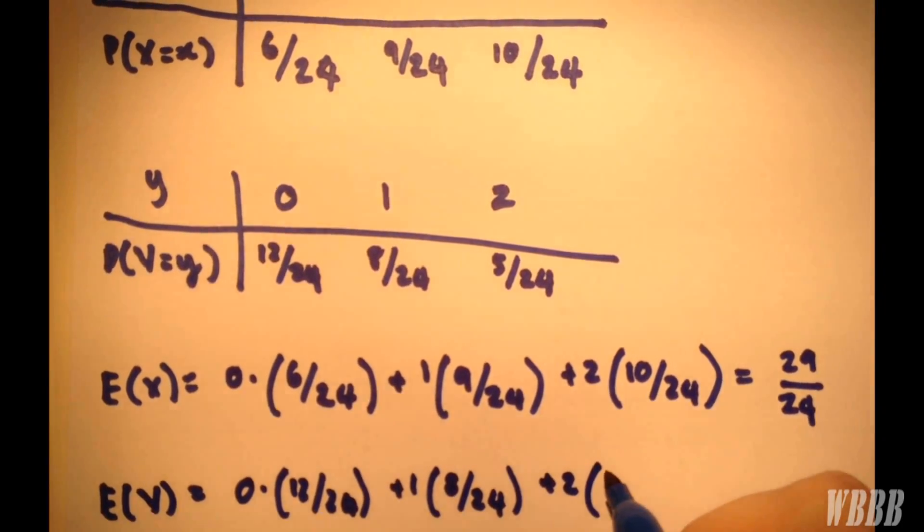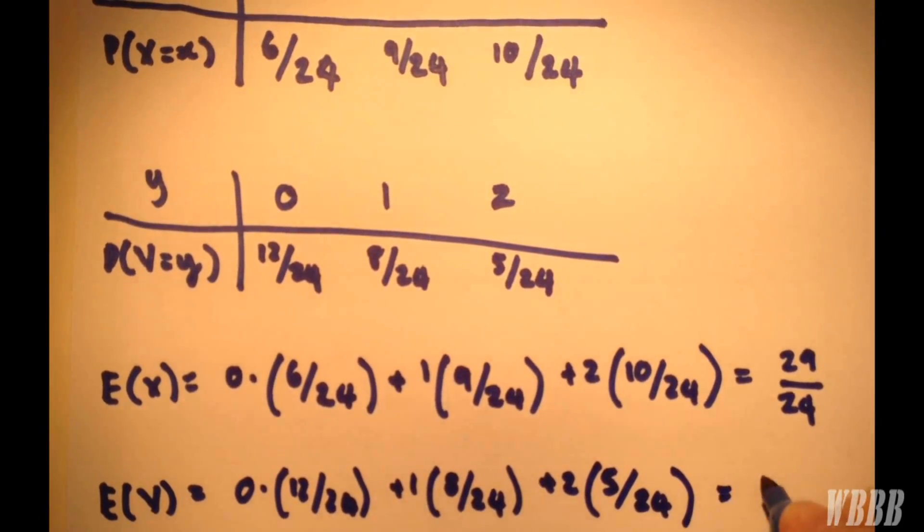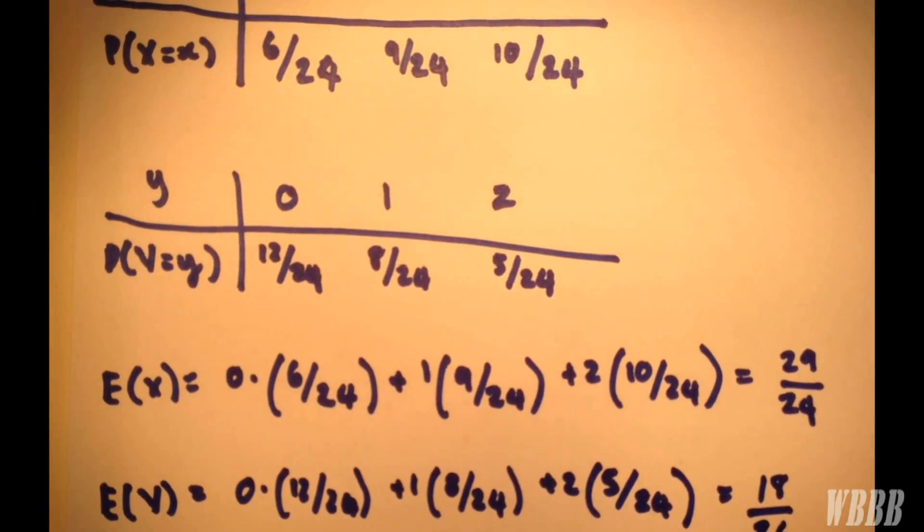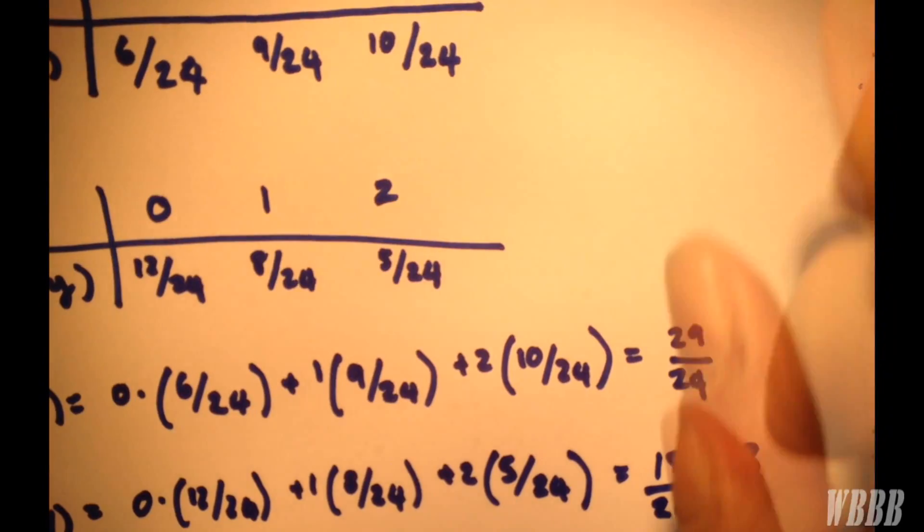I should apologize for my pen sort of blurring slightly. And that gives 18 over 24, which is, of course, a nice round value, 3 over 4.